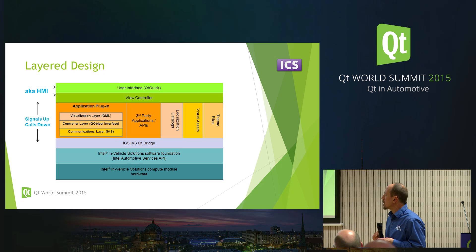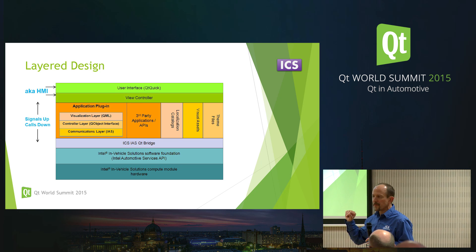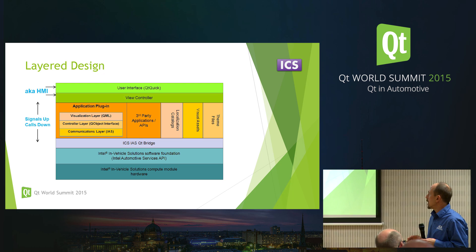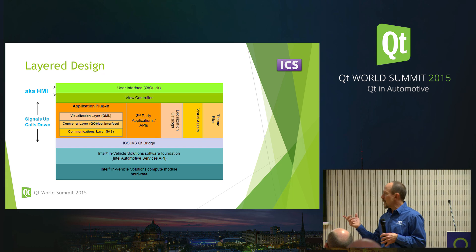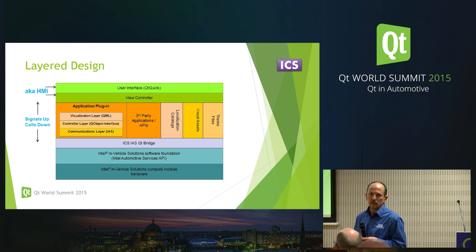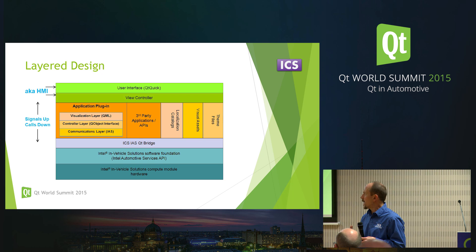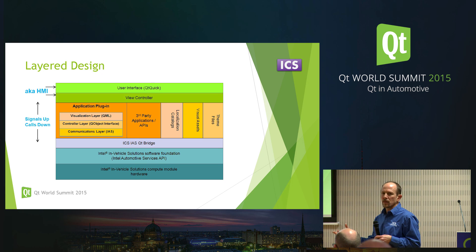The applications are in the form of plug-ins which use the model-view-controller format. They have a presentation or visualization area, a functionality area, and an interface into the rest of the system. Below that sits what we call the IAS Qt bridge — named because Intel Automotive Services was the API we started with. On other platforms it may have a different name, but it maps the functionality of the underlying hardware and Intel API into nomenclature that Qt can use — signals, slots, and properties — making it very transparent.